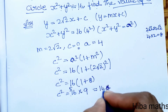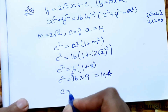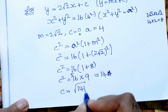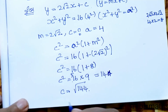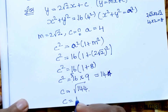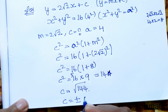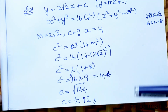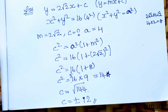So c = √144. Therefore, c = ±12. That is the value of c. Thank you so much for watching.